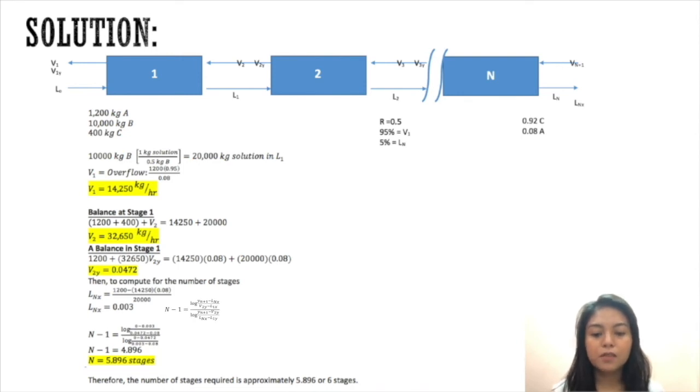To solve the number of stages we use this formula from the book: log[(0.03 - 0.03)/(0.0472 - 0.08)] divided by log[(0 - 0.0472)/(0.03 - 0.08)]. We get a value of 4.896. We add 1 to that, so the actual number of stages is approximately 5.896 or 6 stages. That's it, thank you.